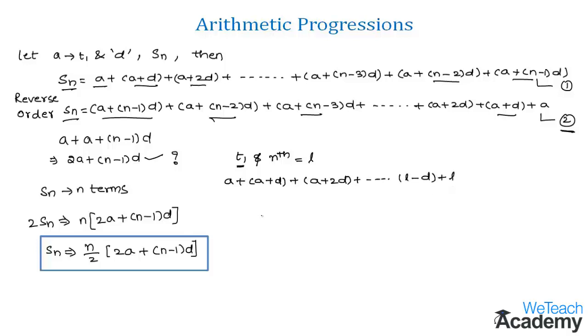So the formula to find the sum of such nth terms would be Sn equals n over 2 into a plus l, where n is the number of terms, a is the first term, and l is the last term.